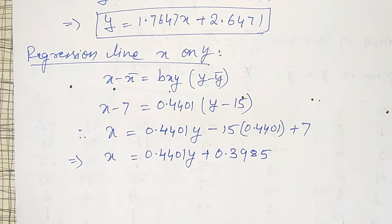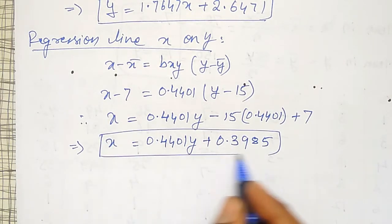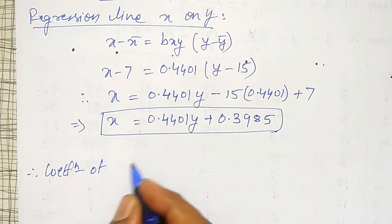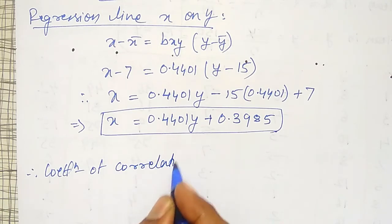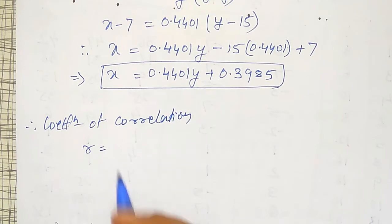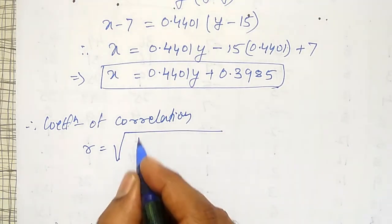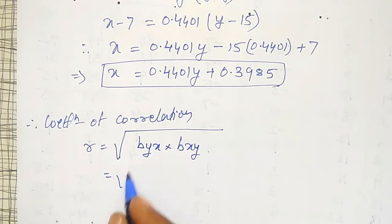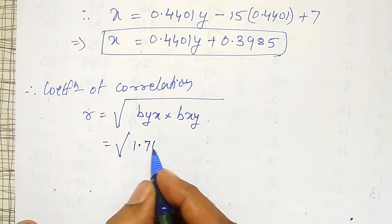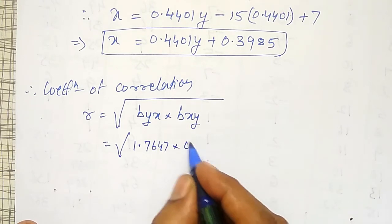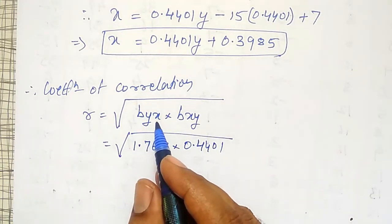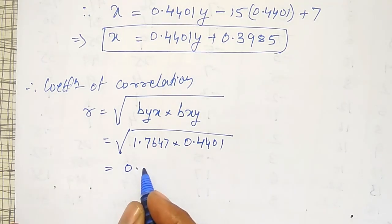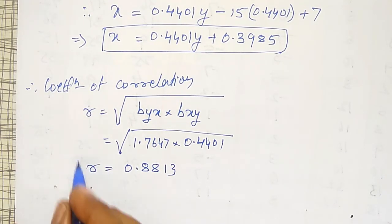Using these regression lines, I have to find out the coefficient of correlation. The coefficient of correlation R equals the square root of byx times bxy. That is, the square root of 1.7647 times 0.4401. This formula has already been derived and shown in one of my previous videos. Simplifying, I am going to get 0.8813 as my correlation coefficient.